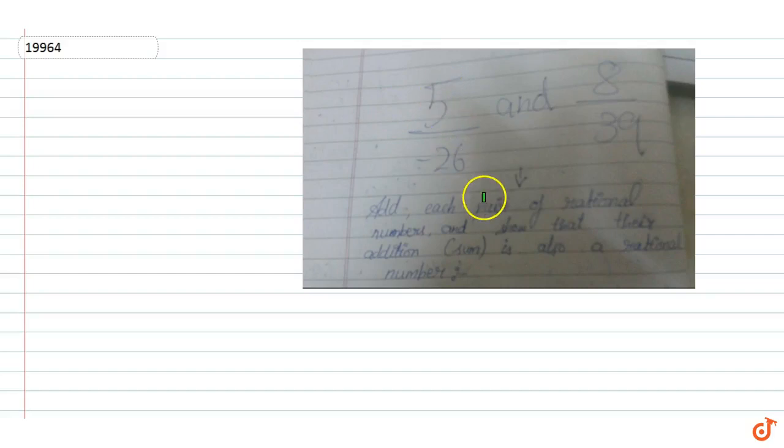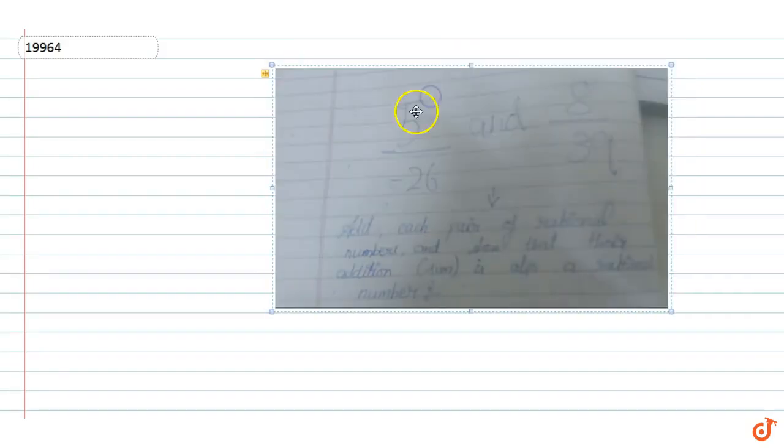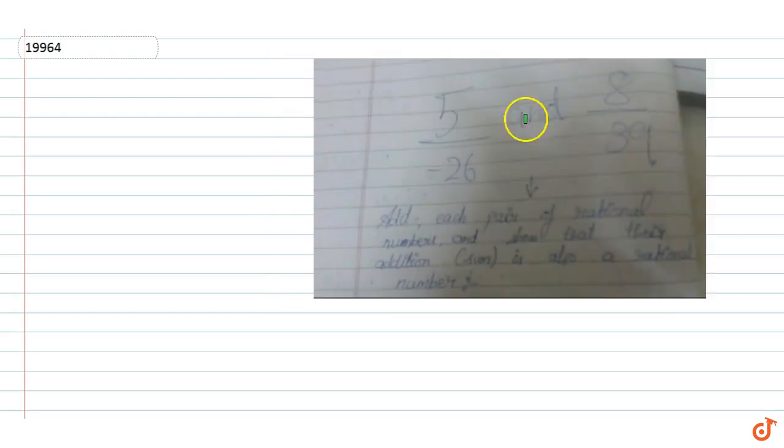The question given is to add each pair of rational numbers. The pair is 5 upon minus 26 and 8 by 39. We have to add these two numbers and we have to show that the sum of two rational numbers is always a rational number.